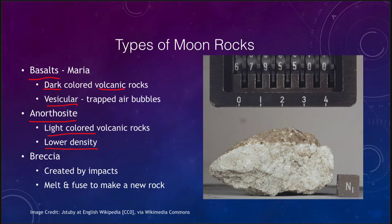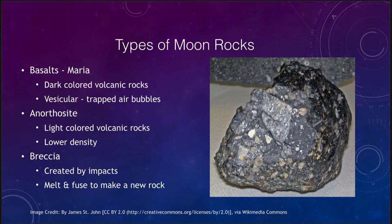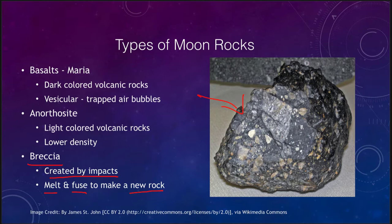The third type of moon rock is what we call breccia. A breccia is a rock created by impacts — the impact melts and fuses materials to make a new rock. Essentially, a massive impact melts some of the existing rock and causes different bits of different rock types to fuse together in a conglomerate. That gives us a whole new type of rock called a breccia, which is completely different from the others — it is some of those different rock types cemented together.